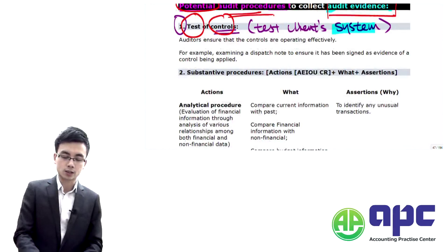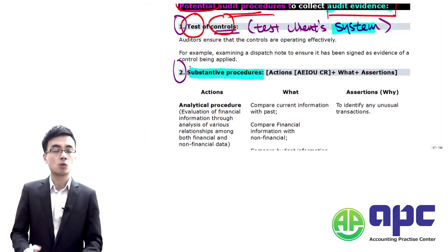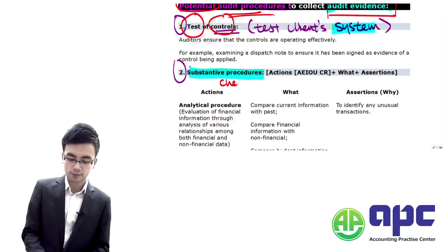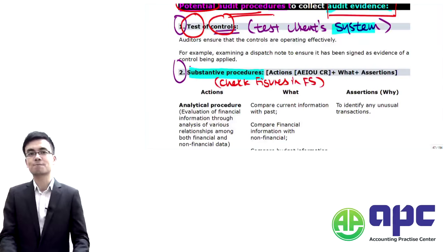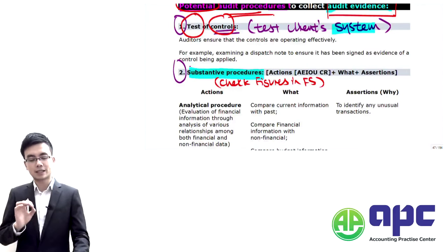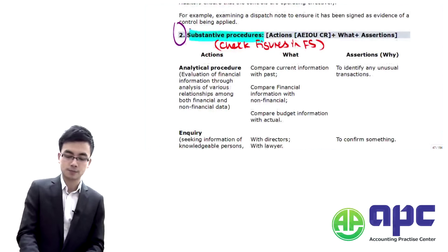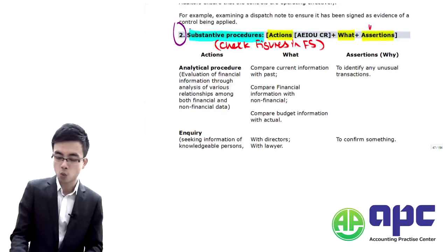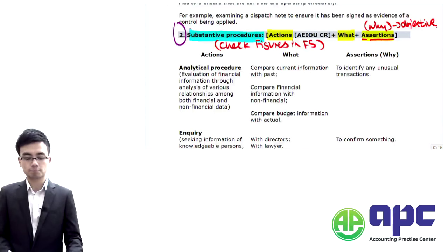The second way to use planned audit procedures is substantive testing — meaning we check the figures in the financial statements directly. To design a substantive procedure, we include three things: the action using the AEIOU+CR mnemonic, what to check, and the assertion — meaning why we are doing it, what our objective is.